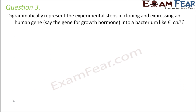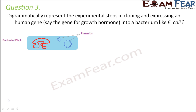Question number 3: Diagrammatically represent the experimental steps in cloning and expressing a human gene — say the gene for growth hormone — into a bacterium like E. coli. First we need to identify our gene of interest: the human gene, which is maybe the gene for growth hormone.